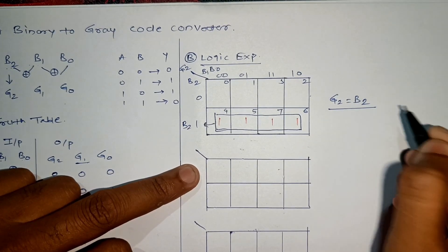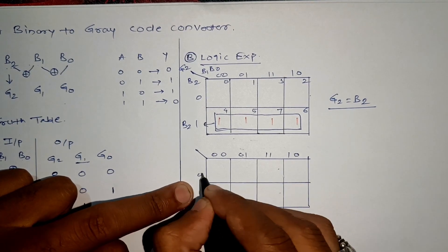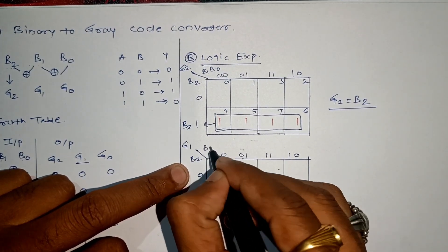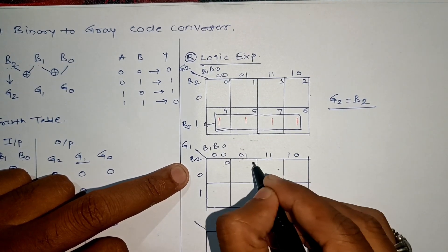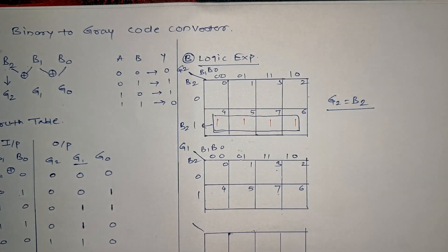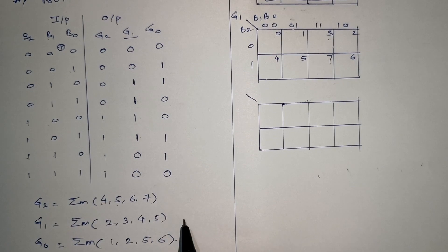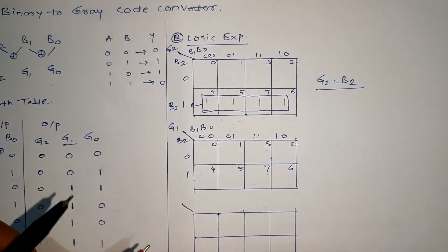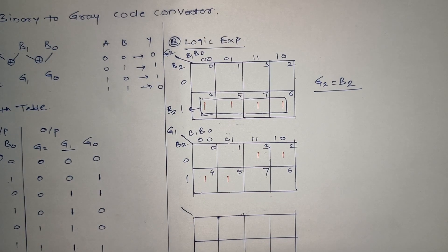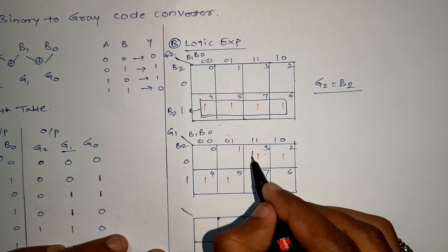These four terms can be transformed. B2 is equal to 1, so G2 equals B2, same expression. Similarly, for G1, again inputs are B2, B1, and B0. G1 is 1 for 2, 3, 4, 5, so let's place 1s at 2, 3, 4, 5. Now we will do the mapping.